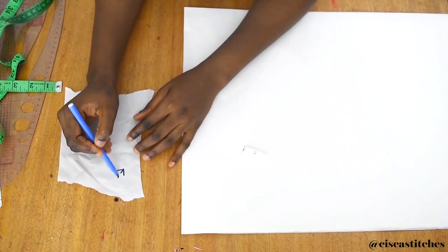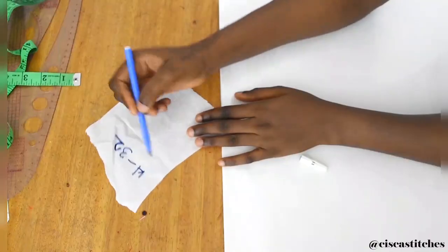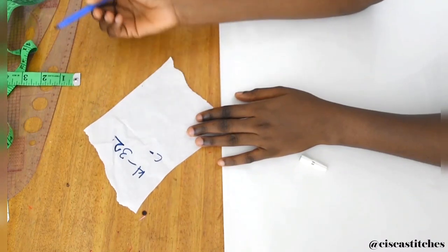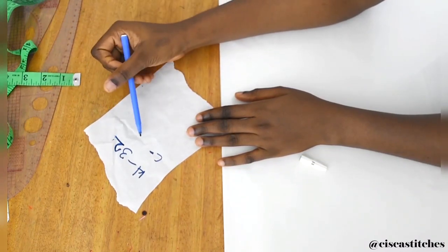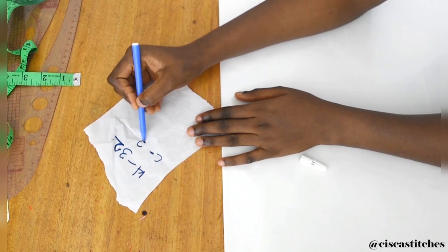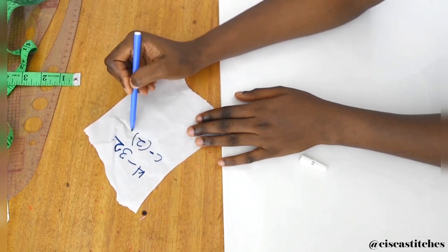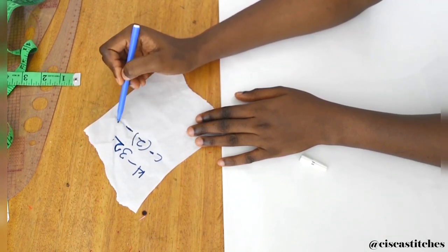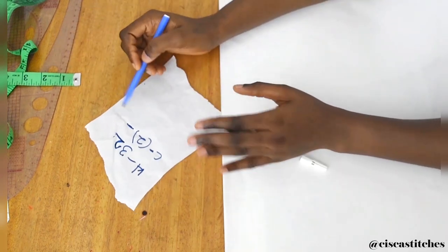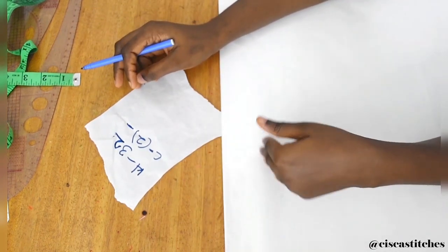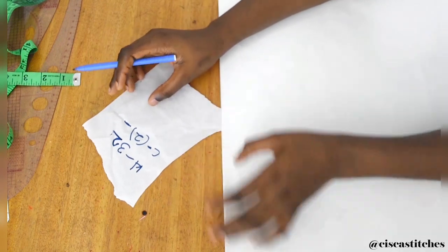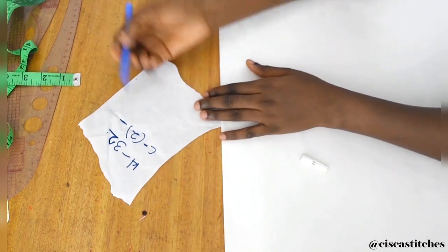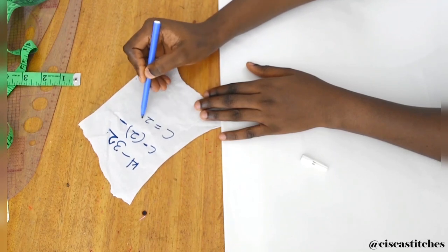My waist is 32, so that is the circumference. What I'm going to do is add an additional two inches to this. These two inches is going to serve as seam allowance and zipper allowance. I'm going to do the calculation so we can cut this to our waist measurement. The formula I usually use is circumference equals 2πr.